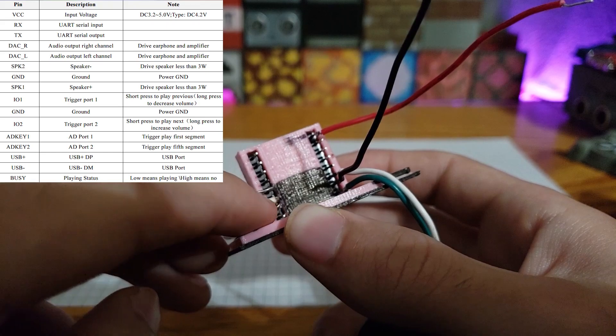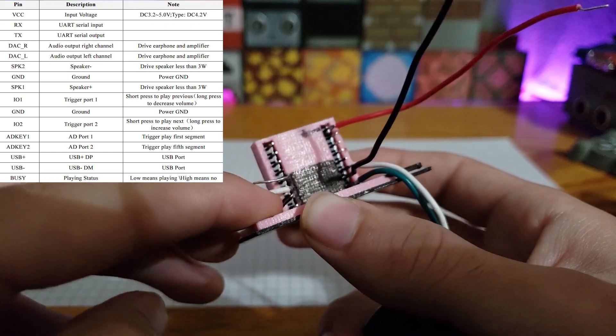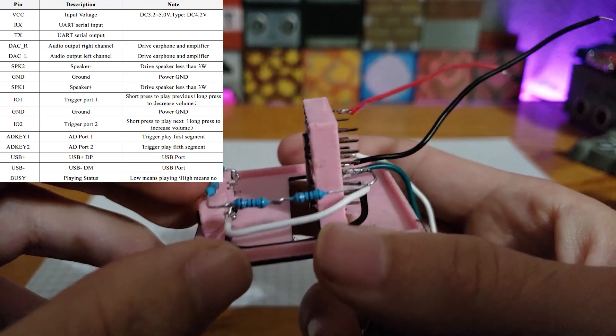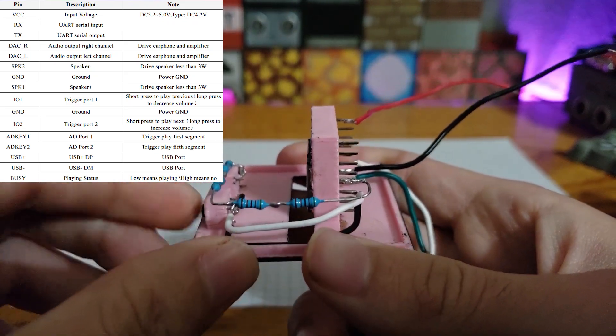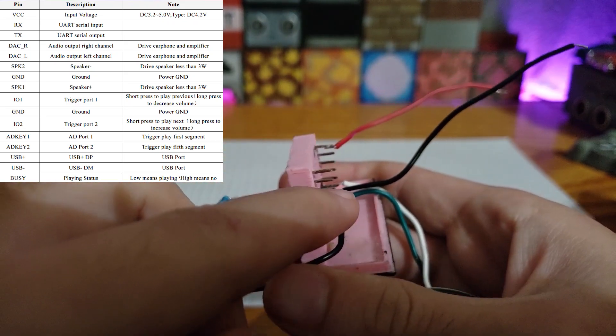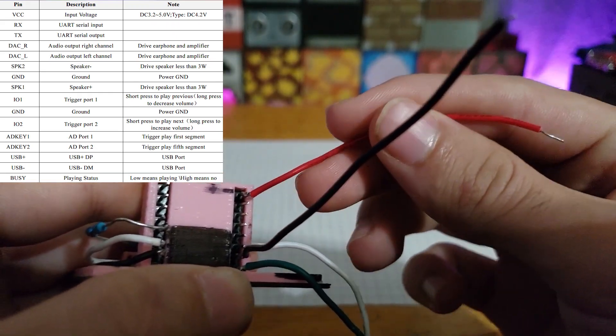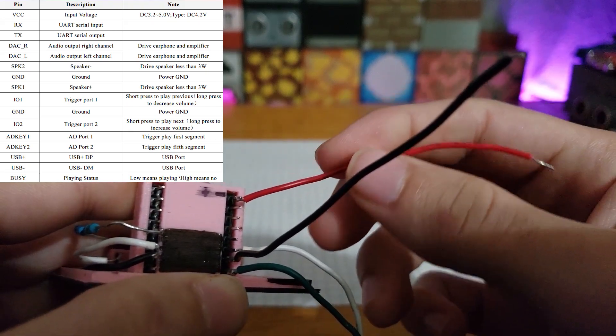And what this pin is able to do is play the next track. So now under the play next pin is the ground pin. And so the ground pin is connected to the other side of the buttons in order to ground the other two pins once the button is pushed. Over here on the top right is the power in, or VCC.